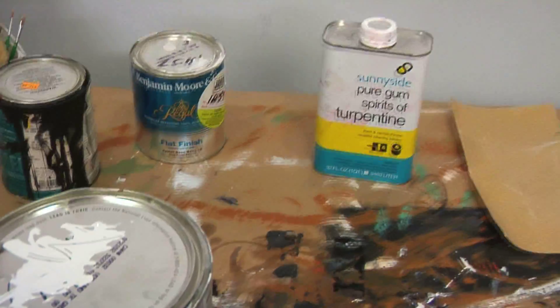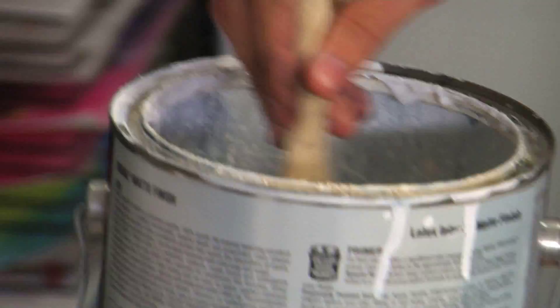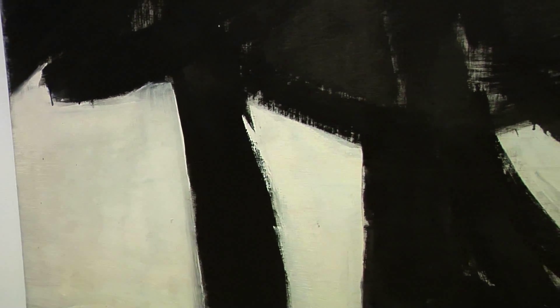So why was Kline so enamored with house paint? Well because it's cheap, because it's kind of crass, because it's kind of consumerist, because it's not fine art.